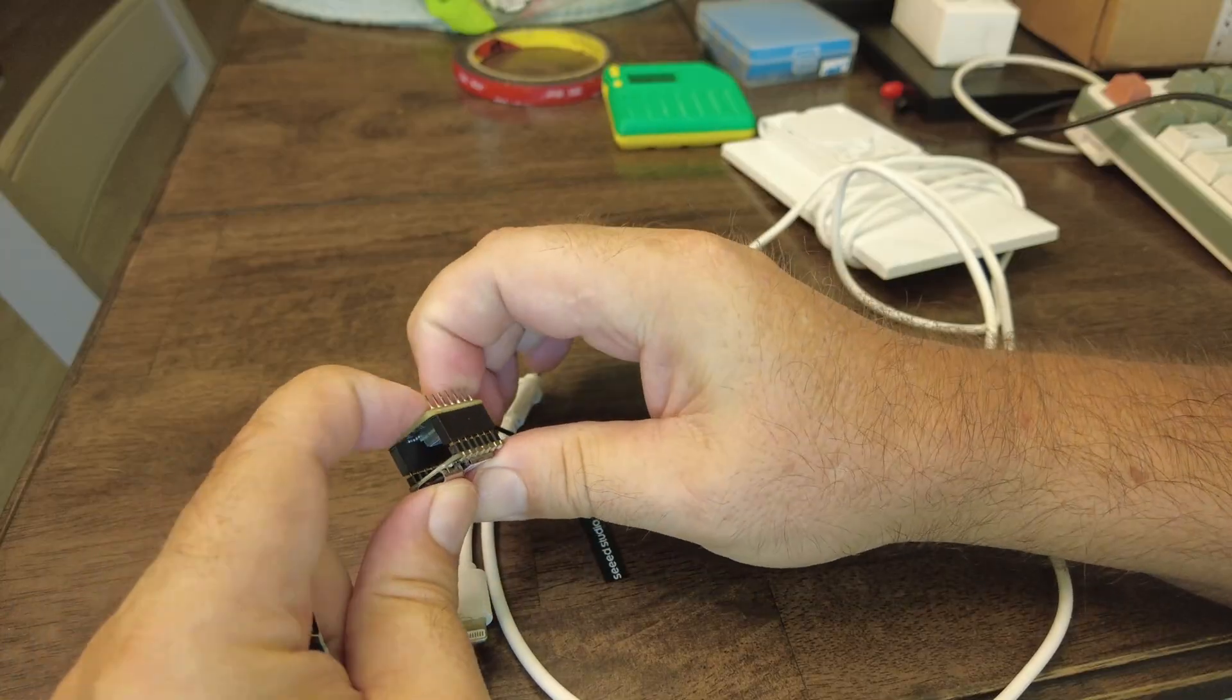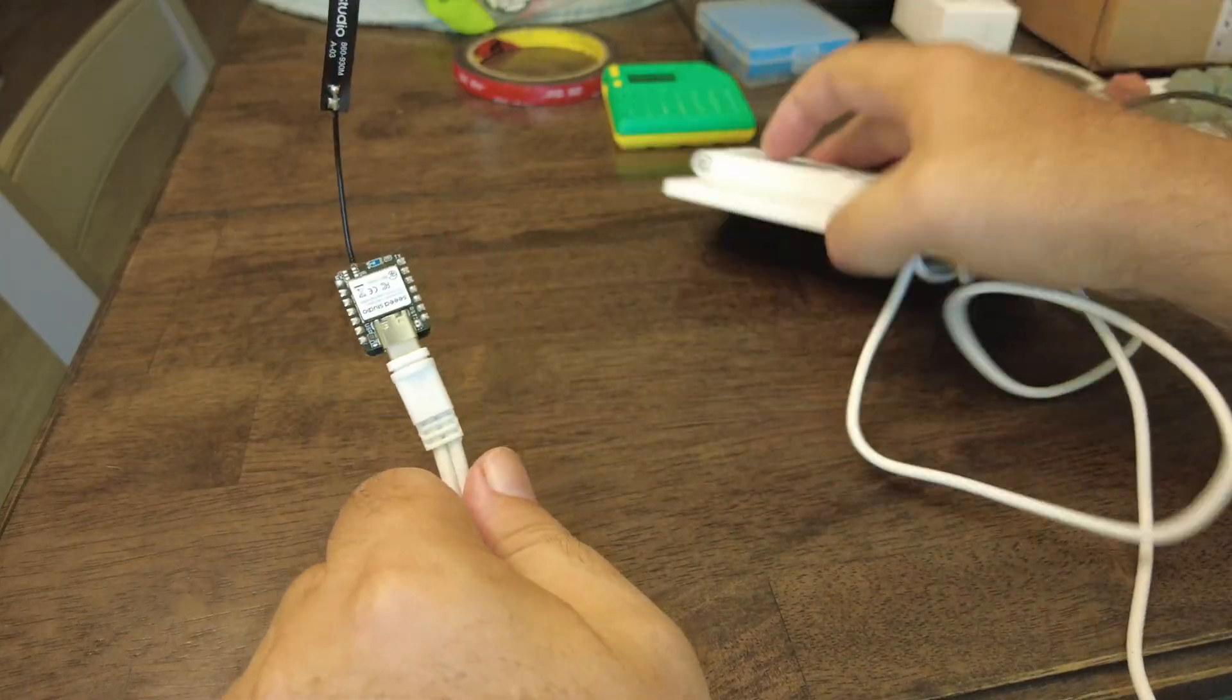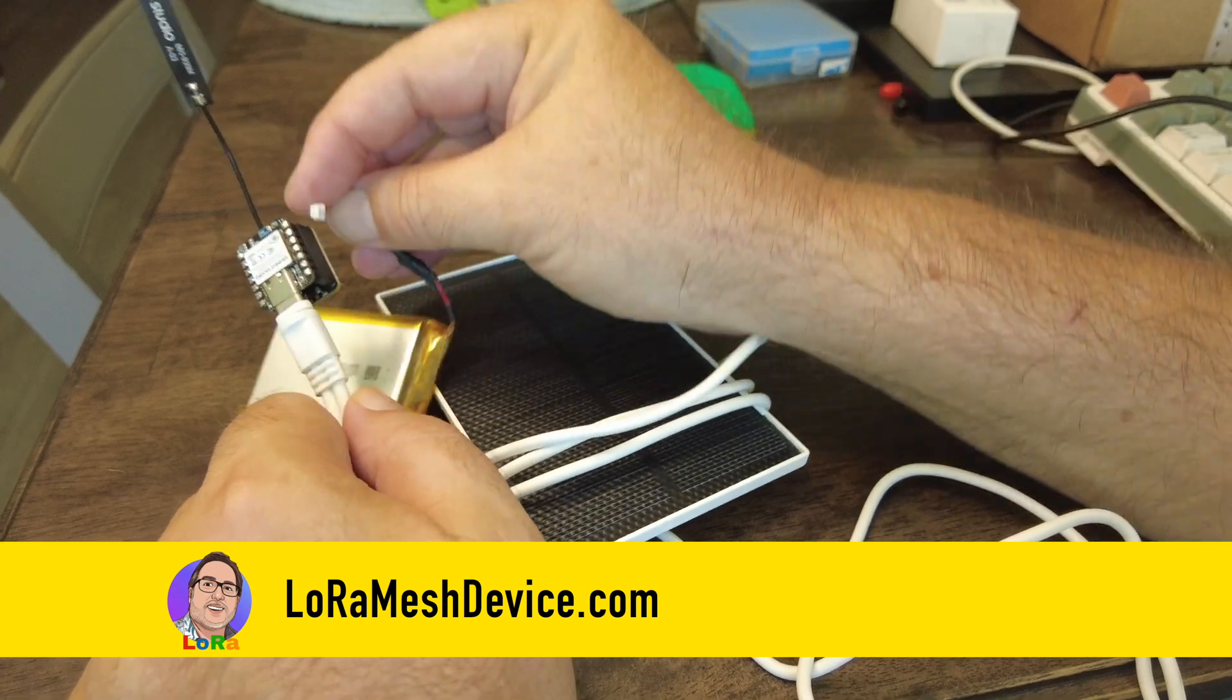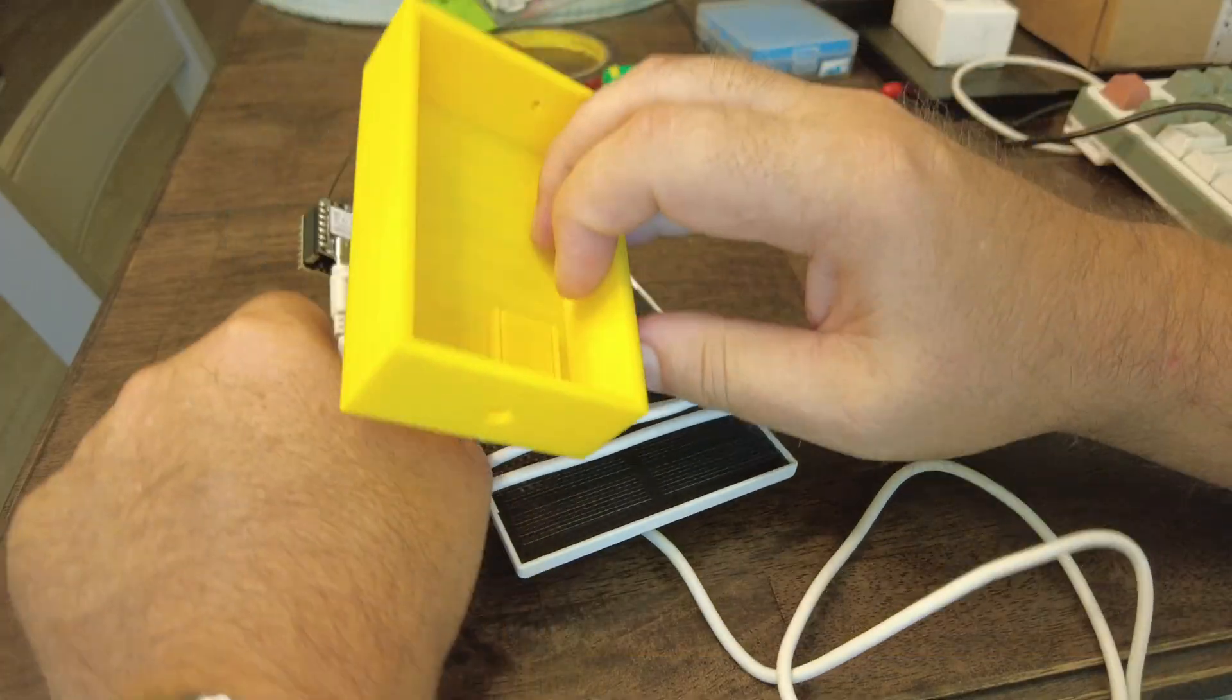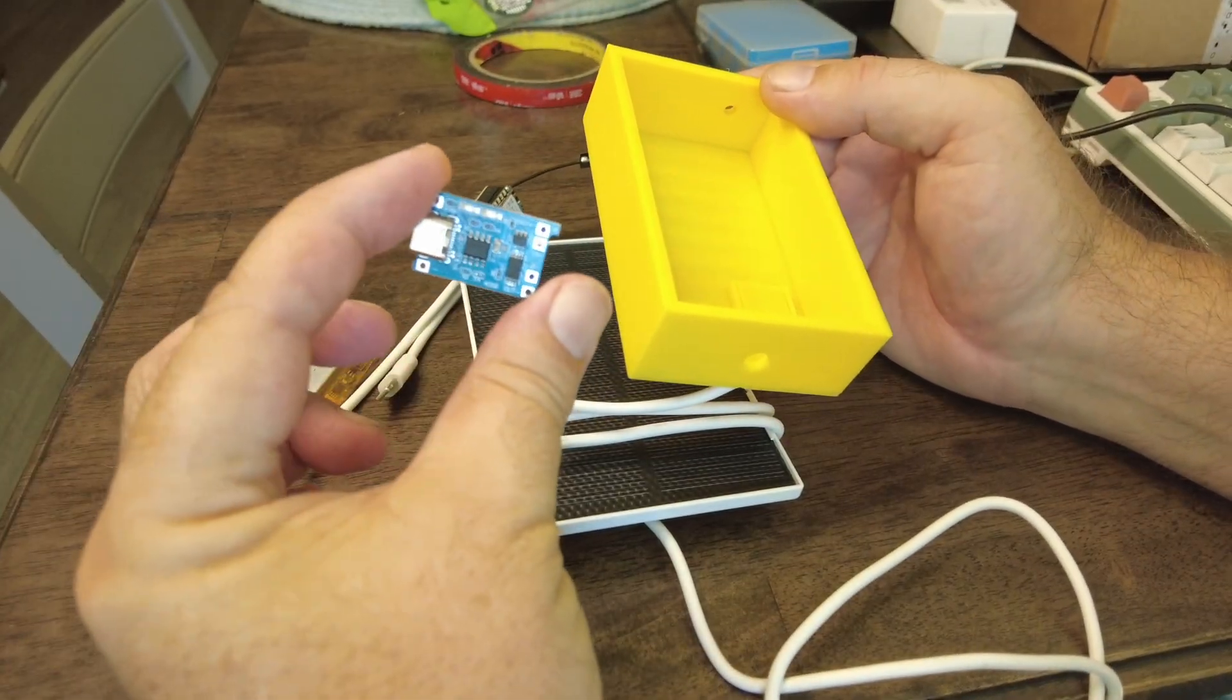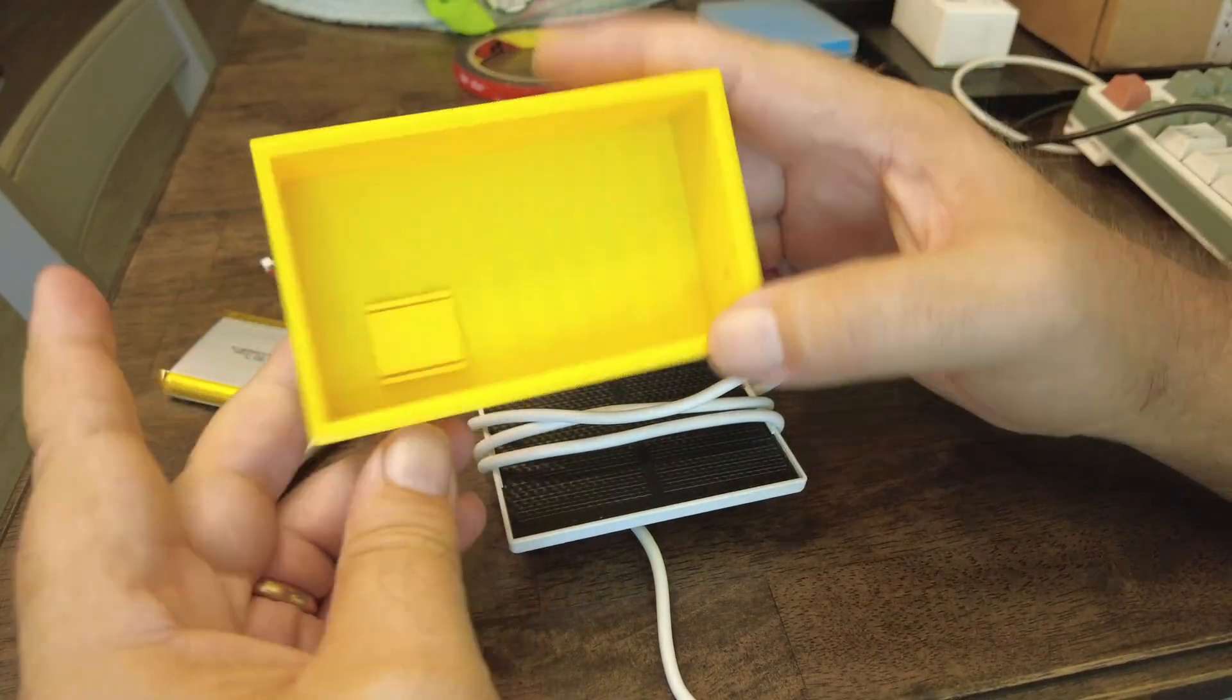I'll connect a little solar panel in there and then I have a little battery I will connect. Then I printed this little case. I can put a proper MPPT charge controller in like this one, but I think I'll try it first with just the built-in charge controller.